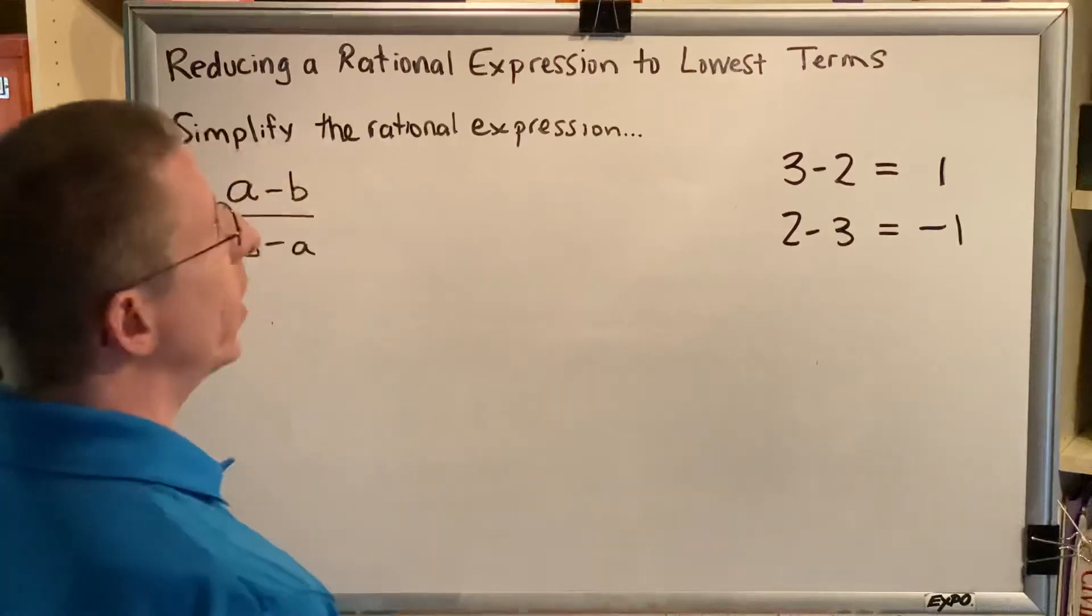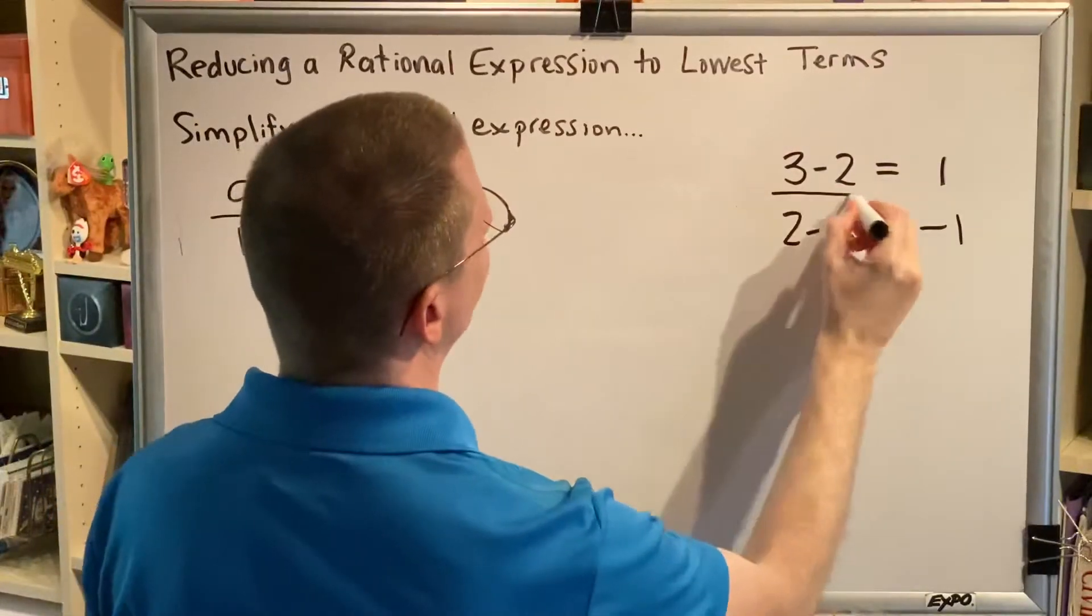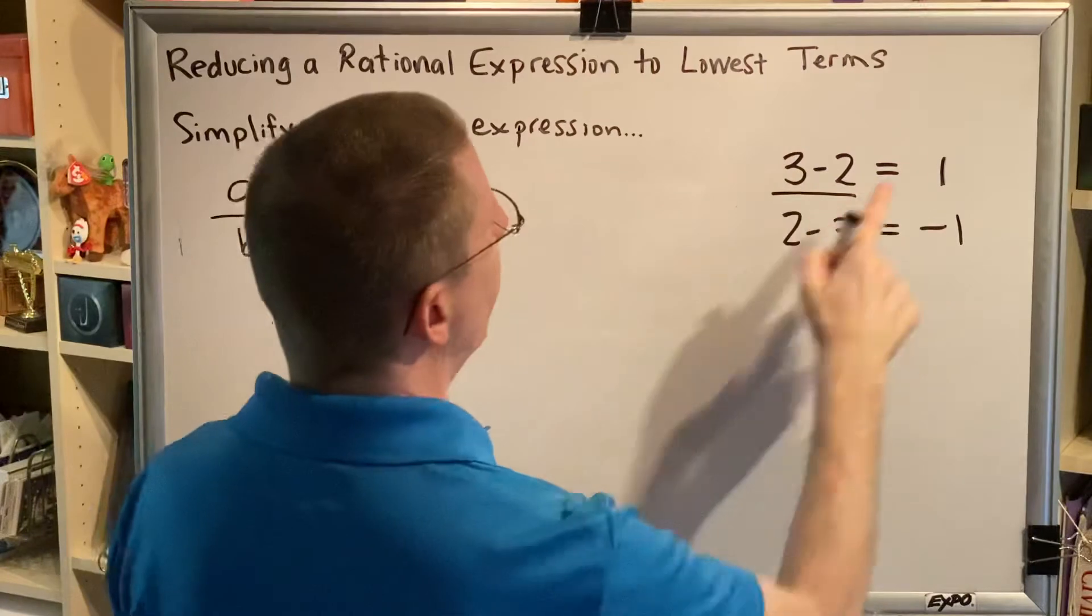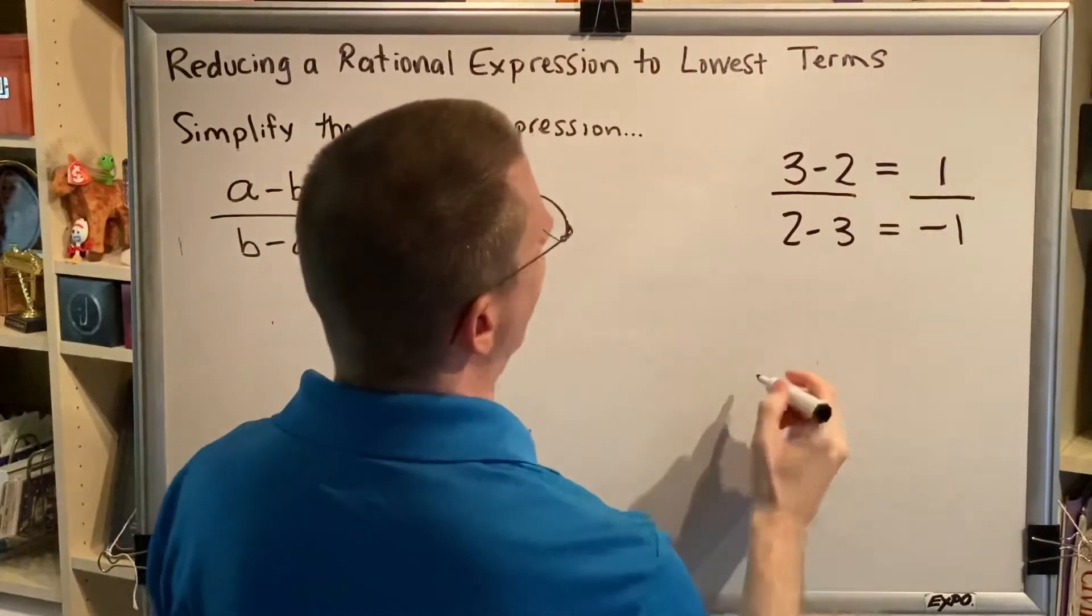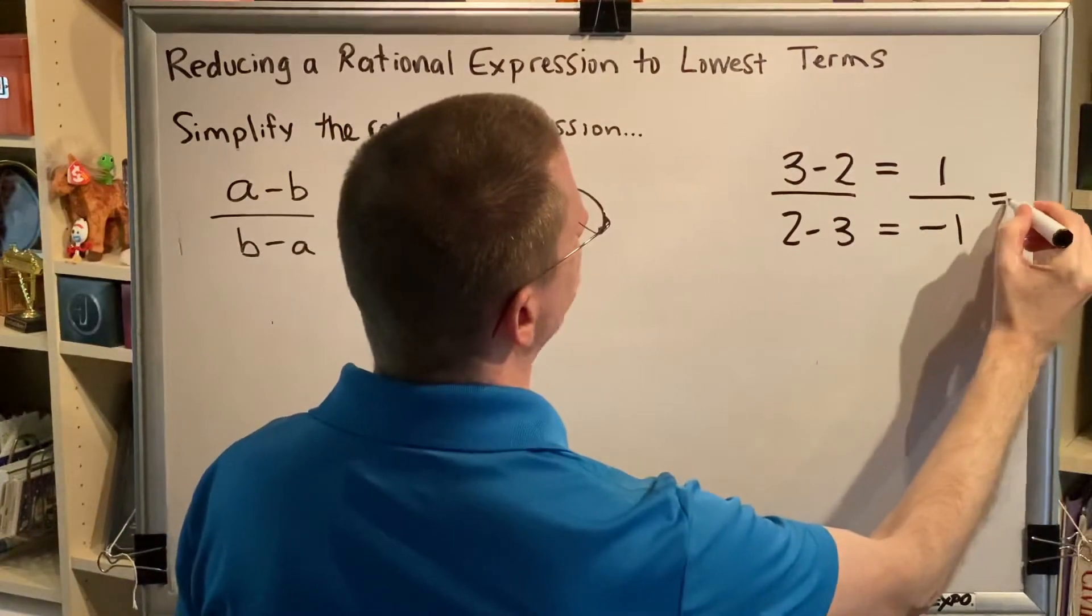So when we express this as a ratio, 3 minus 2 divided by 2 minus 3, that's going to be 1 divided by negative 1, which gives the result negative 1.